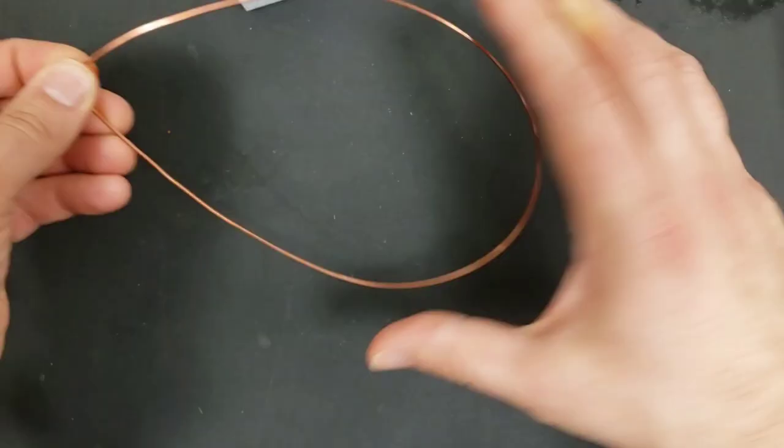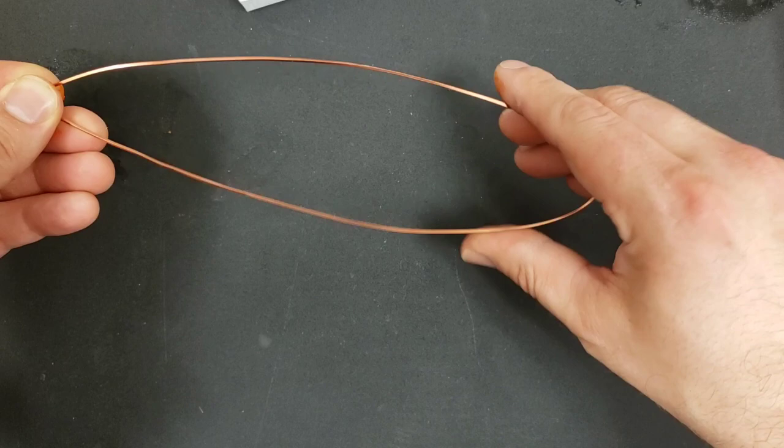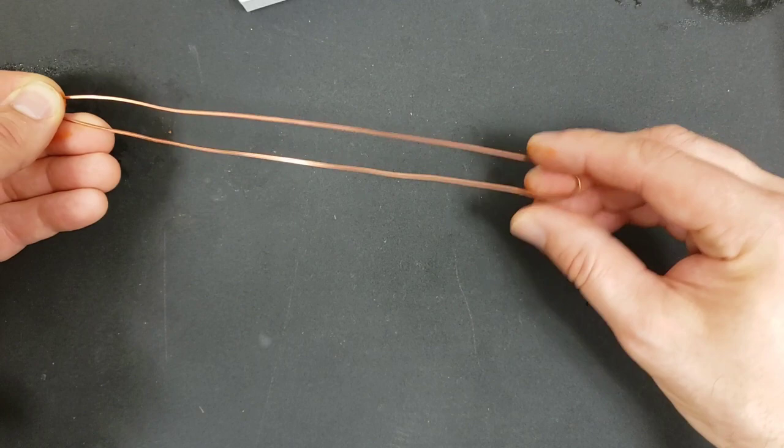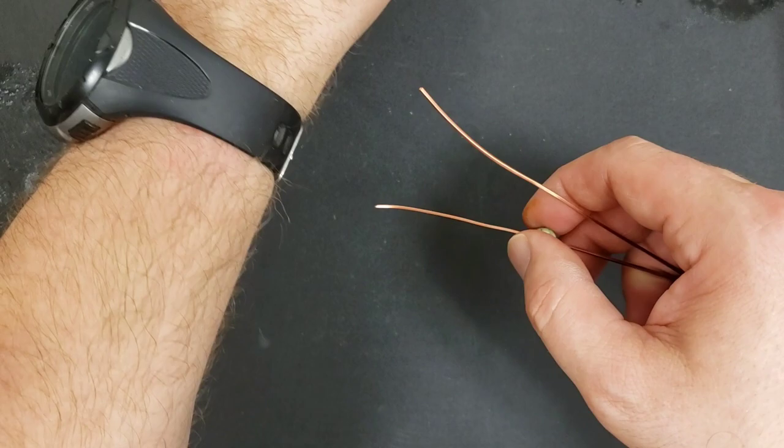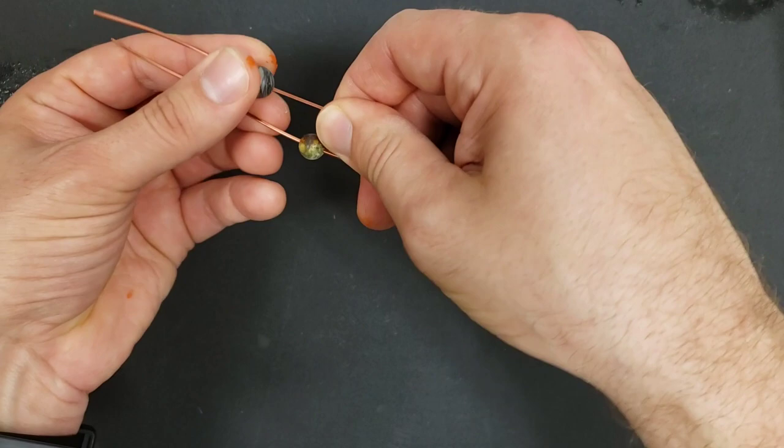First we're going to fold it in half. Put the ends together, pull it down like that in half. Now we're going to put one stone on each and we're going to bring each of these halfway down. Sometimes if the stone fits and then suddenly gets stuck, it's because you've got to straighten the wire a little bit. So roughly halfway down. I'm not trying to be too perfect.